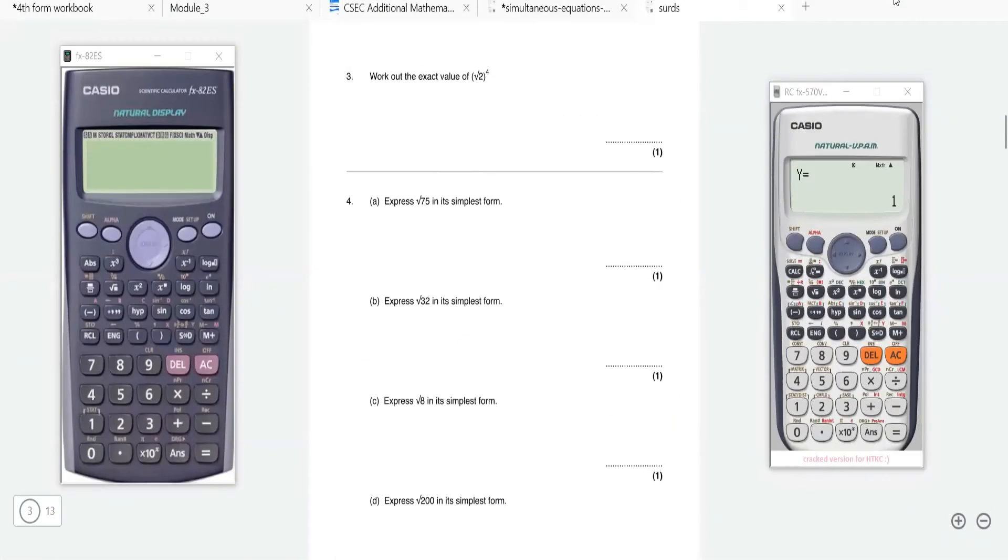Welcome to CXC Math TV. Today we're going to show you how to simplify surds in a calculator. Look at this - it says we're supposed to express the root of 75 in its simplest form.